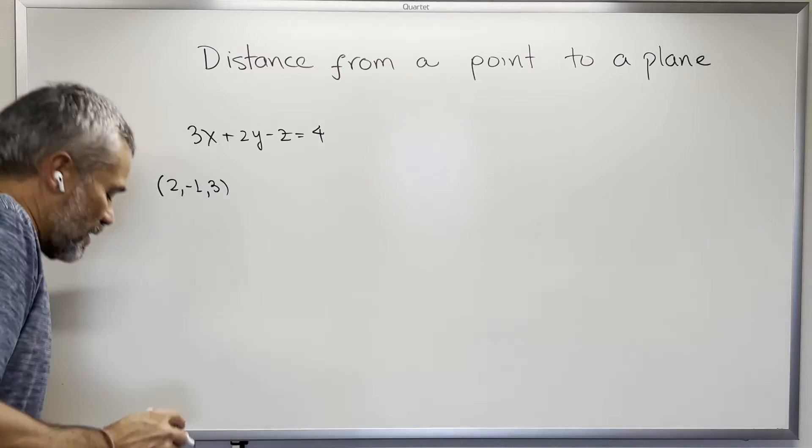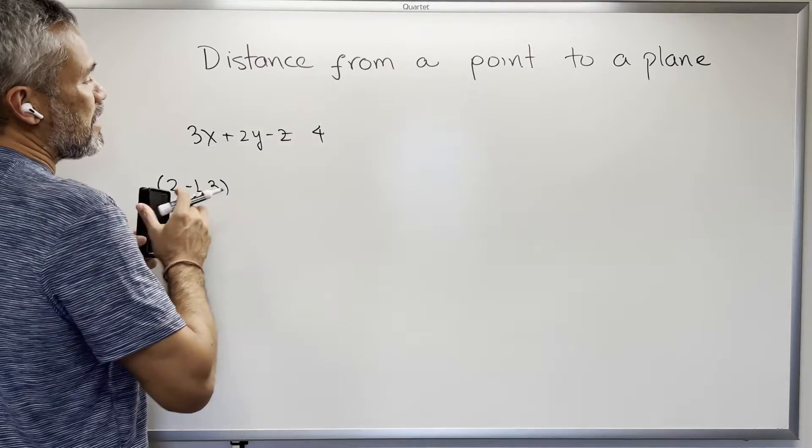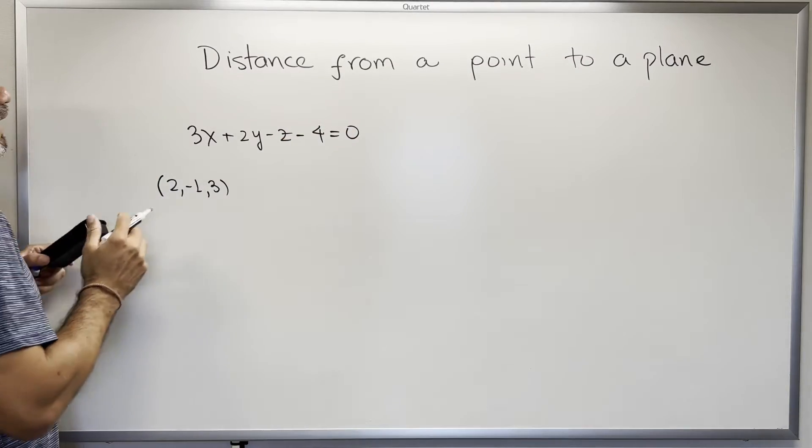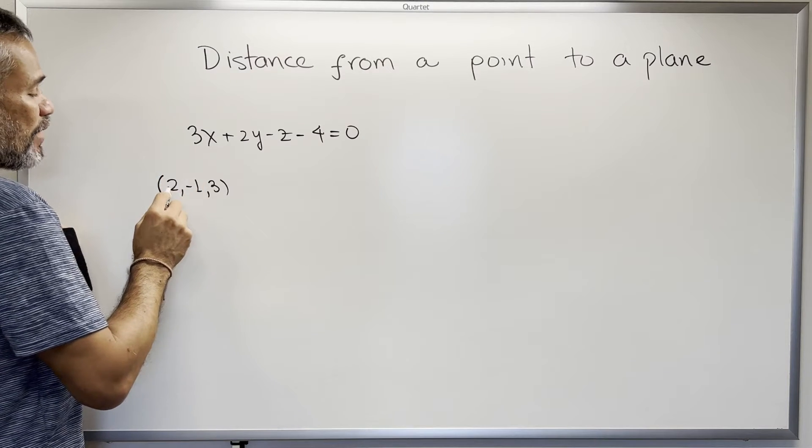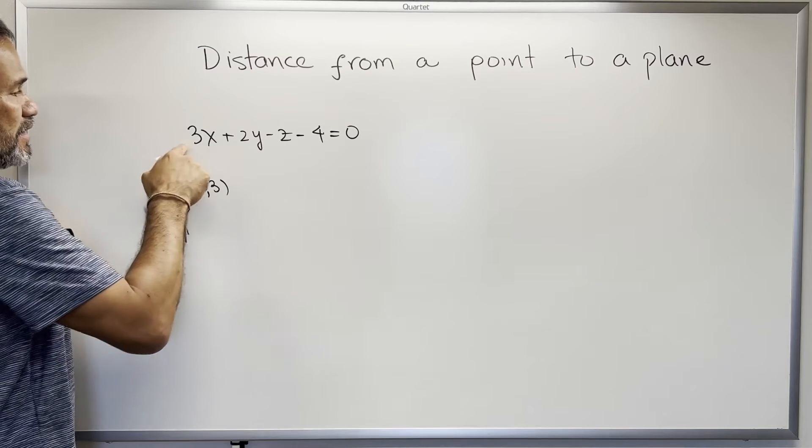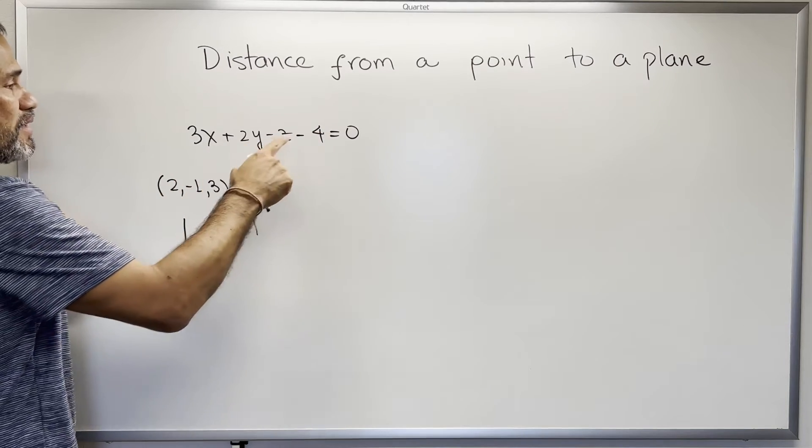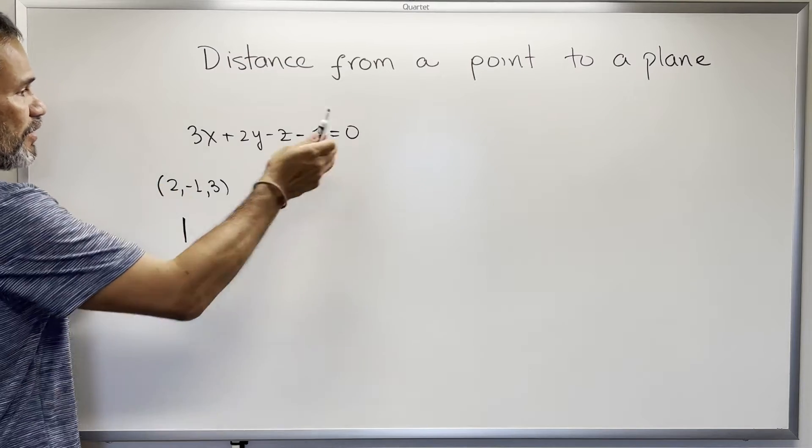Then what we can do is we can rewrite the equation so that it's set equal to 0. And from here, we just do the absolute value of whatever we get when we replace x in this equation. We replace x with 2, y with negative 1, z with 3.